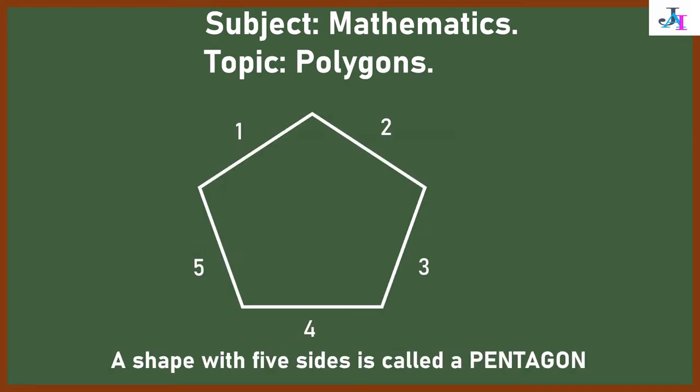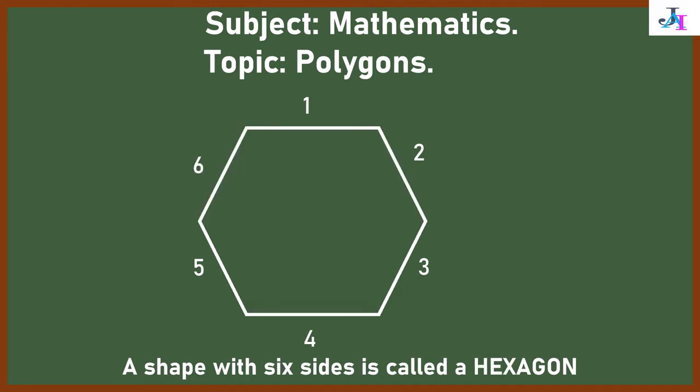Let's count the sides: one, two, three, four, five. A shape with six sides is called hexagon.